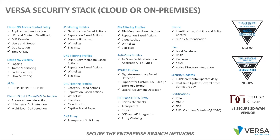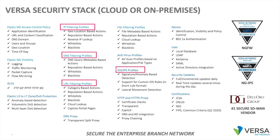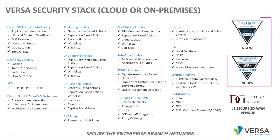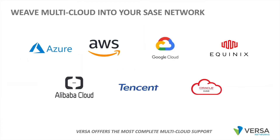Versa has a very powerful security stack. From early on, we've converged routing, SD-WAN, and security into a single piece of software running natively on x86. This includes full support for IP filtering, DNS filtering, URL filtering, IDS, IPS, and SSL decryption. Versa Networks is NSS Labs recommended for next generation firewall and next generation IPS. Versa can also weave all major public clouds into your SD-WAN fabric.